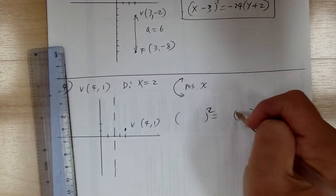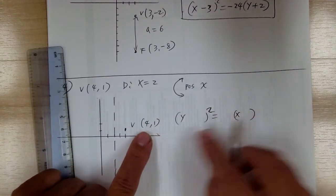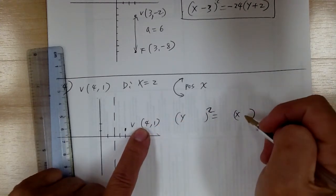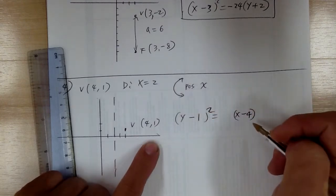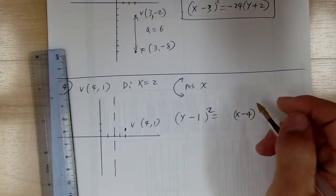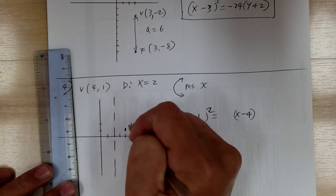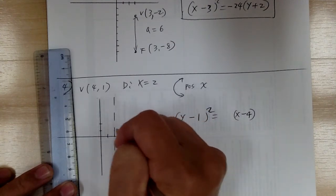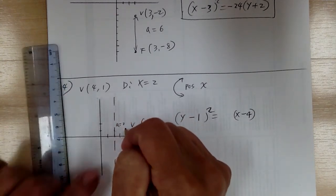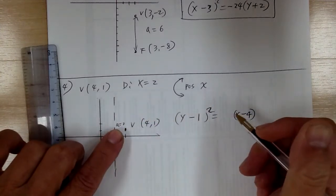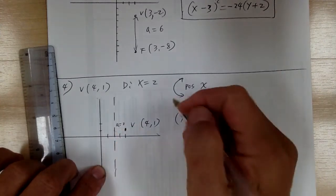So for the x direction, x goes over here and y goes over here. The vertex is (4, 1), so watch your x and y — x is 4 so it would be minus 4, y is 1 so it would be minus 1. Next you have to figure out a. A is the distance between the directrix and the vertex, so a equals 2. Therefore 4a equals 8 — 4 times 2 gives you 8.